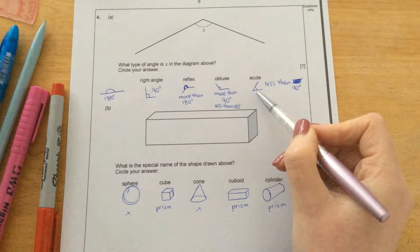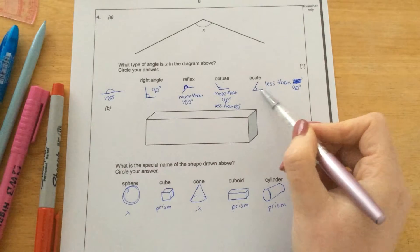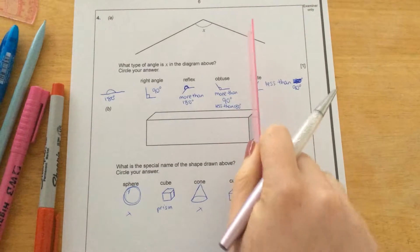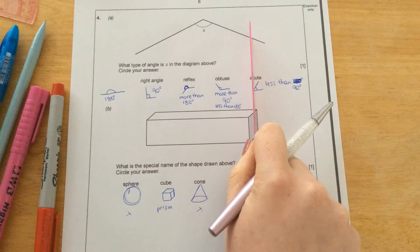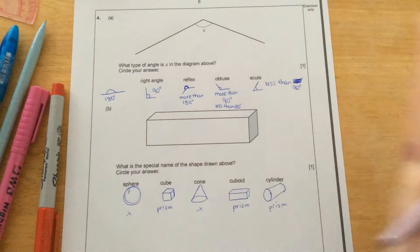Acute is the really cute one. It's the small one, so it's less than 90 degrees. So if it was 90 degrees, the line would be here, but it's not. It's less than that.